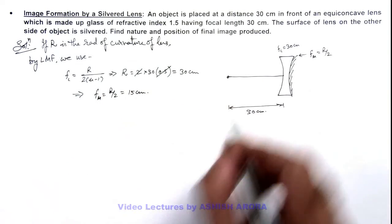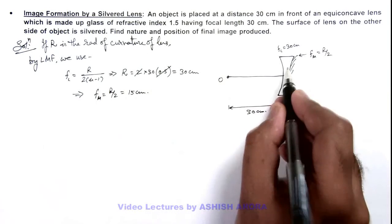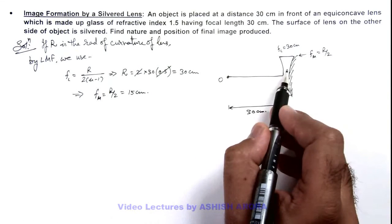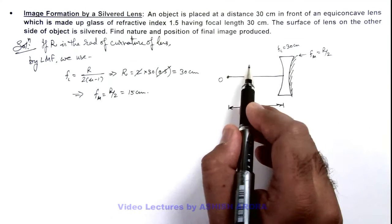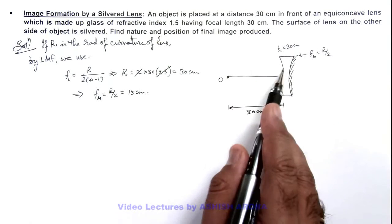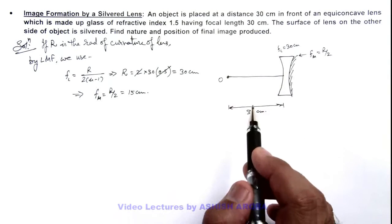Now one light ray from object incident on the lens, first it'll pass through lens, then it'll be reflected from mirror, then again it'll pass through lens and comes out in air. So here lens is being used twice and once the mirror is used.